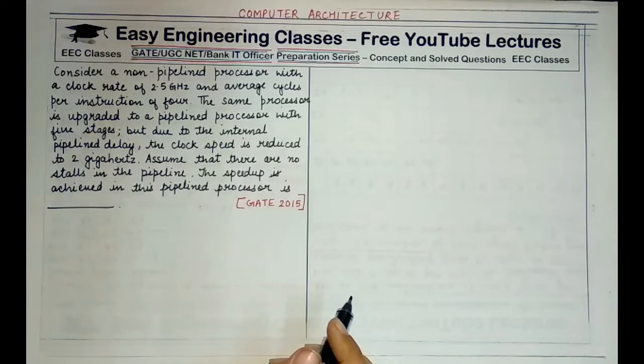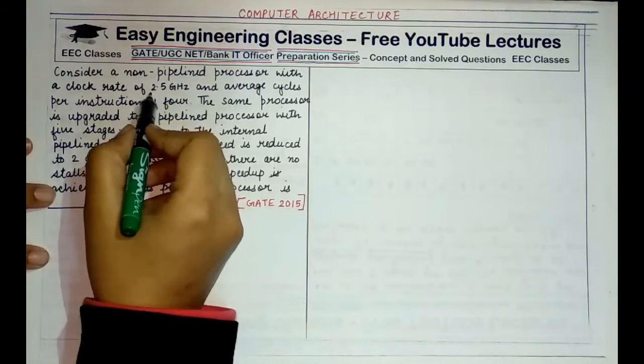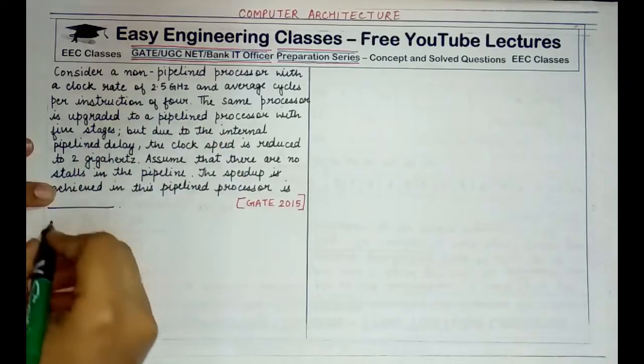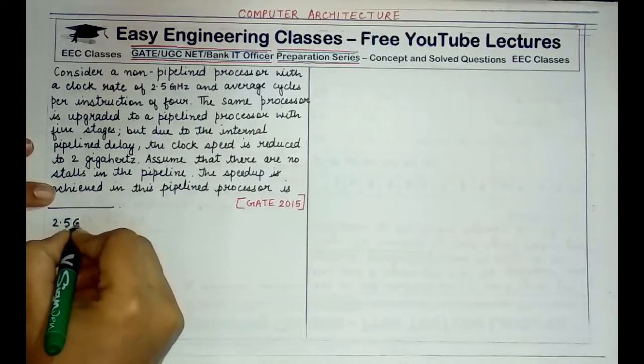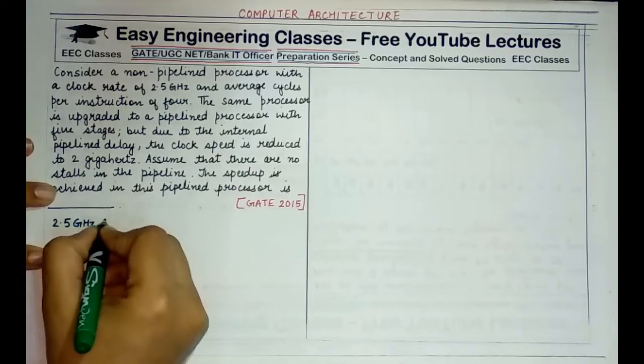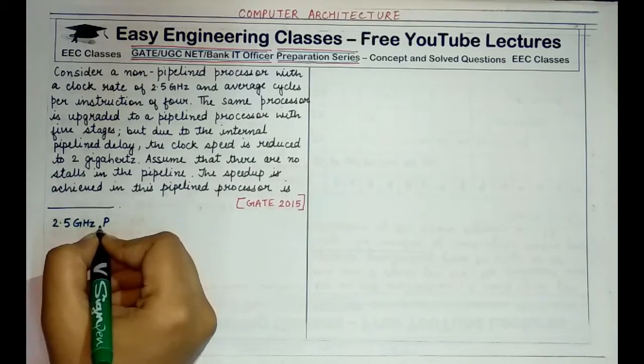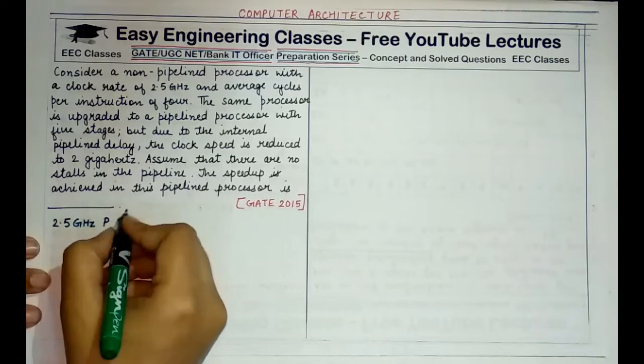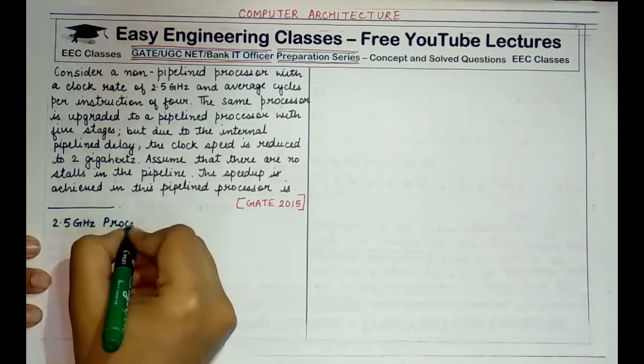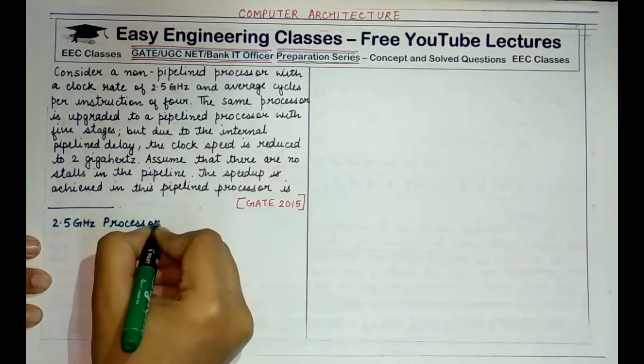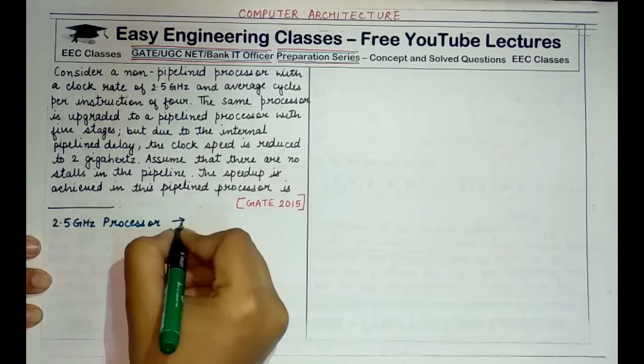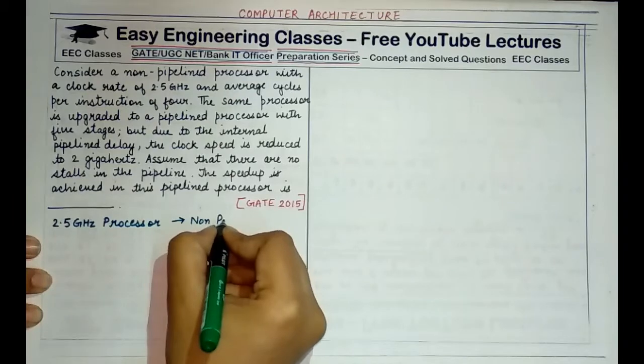Whenever you solve such questions, you need to understand between the lines that the question says. So what do I mean by that? I mean that when you have been told that it is a 2.5 GHz processor, what does that mean? 2.5 GHz processor means that in one second 2.5 GHz are completed. So 2.5 GHz processor which is initially a non-pipelined processor.